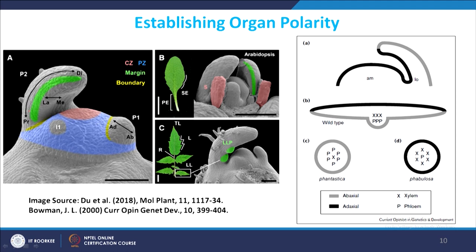In a growing meristem schematic, the face of the lateral organ towards the meristem is called adaxial, and the part away from the meristem is called abaxial. The features of adaxial and abaxial surfaces are very different and must be established early. In a growing leaf primordium, xylem is positioned towards the adaxial side and phloem is positioned towards the abaxial side. Many genes are responsible for maintaining this adaxial versus abaxial polarity.